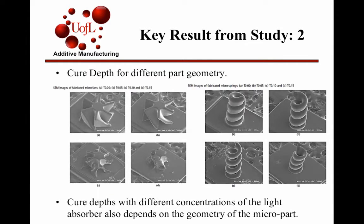They manufactured two different geometries — a micro fan and a micro spring — which led to different results. One part had a different concentration, and the part geometry was perfect for that particular concentration of light absorber. The third concentration gave the perfect geometry of the microspring.